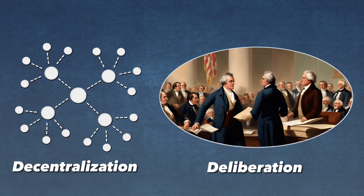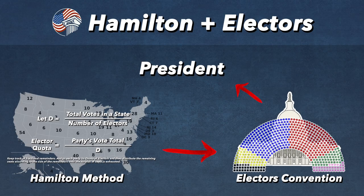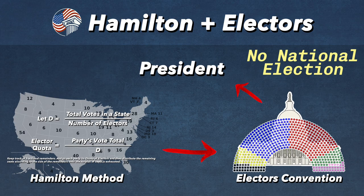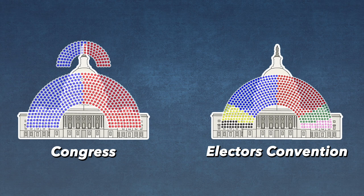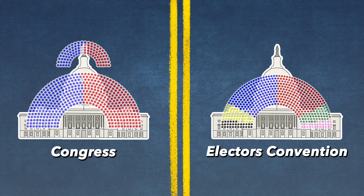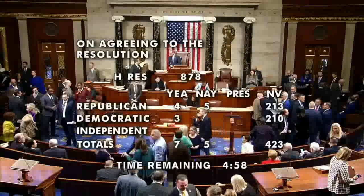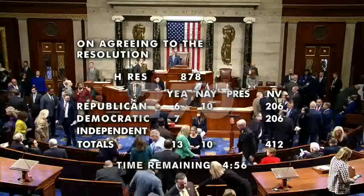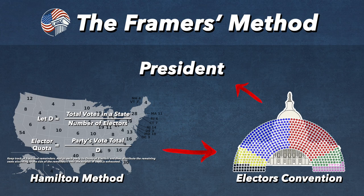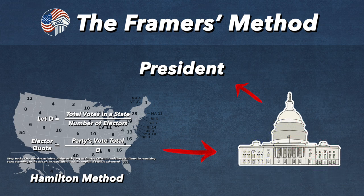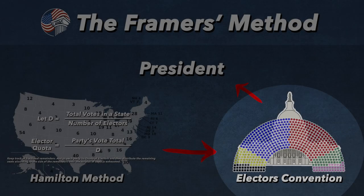An electors' convention would have each state choose electors and then send them to meet at the seat of government. This body of electors would be the same size as Congress, however, would be separate from congressional influence. The body of electors would vote until one of the electors achieves a majority of 270 votes. Once the electors choose a president, the body is dissolved as it has served its temporary purpose. An electors' convention will be discussed in more detail in future videos.